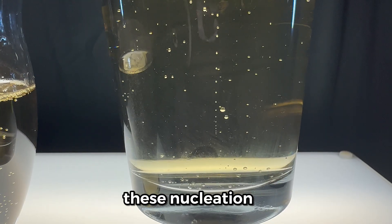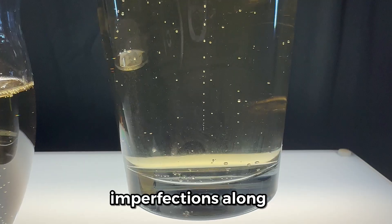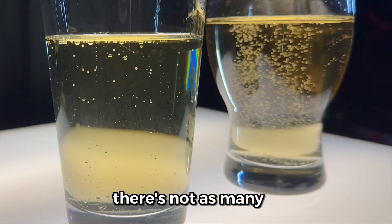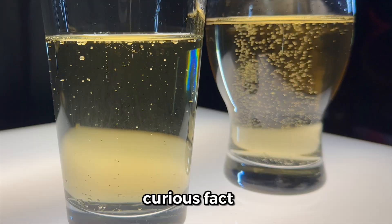But in normal glasses, these nucleation sites are usually found in cloth fibers or imperfections along the glass surface. But of course, there's not as many of these, which is why there's far fewer bubbles.